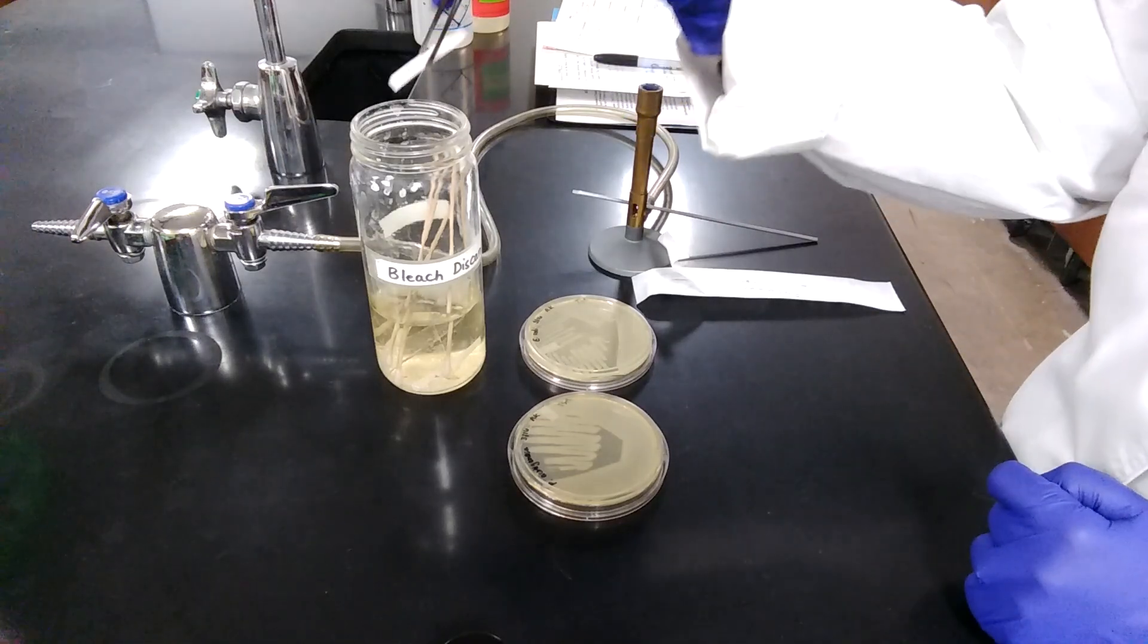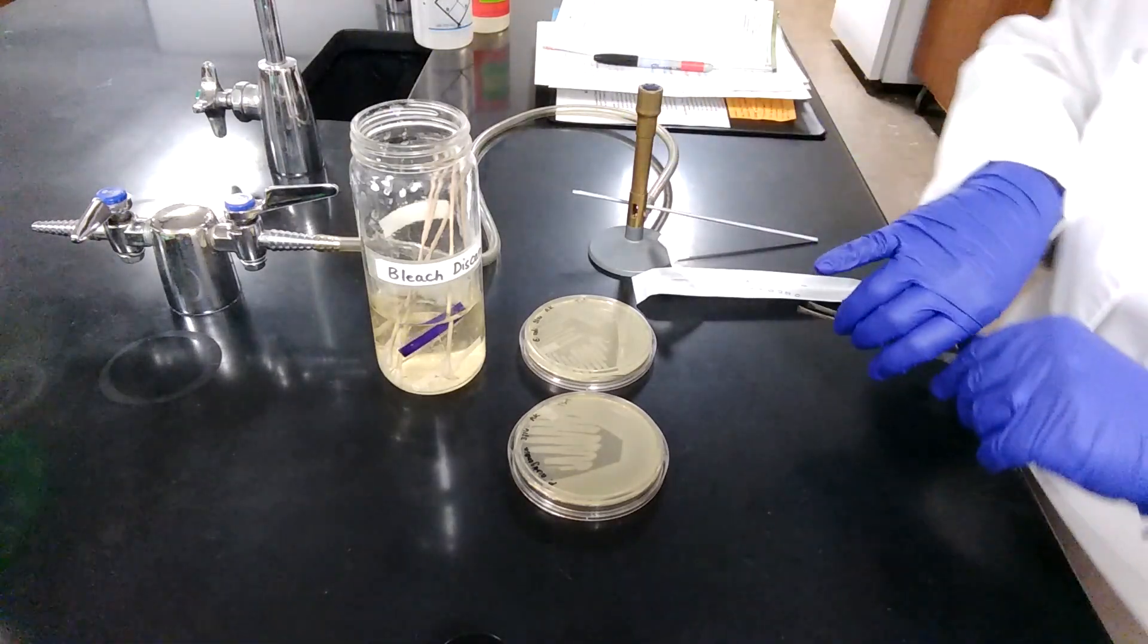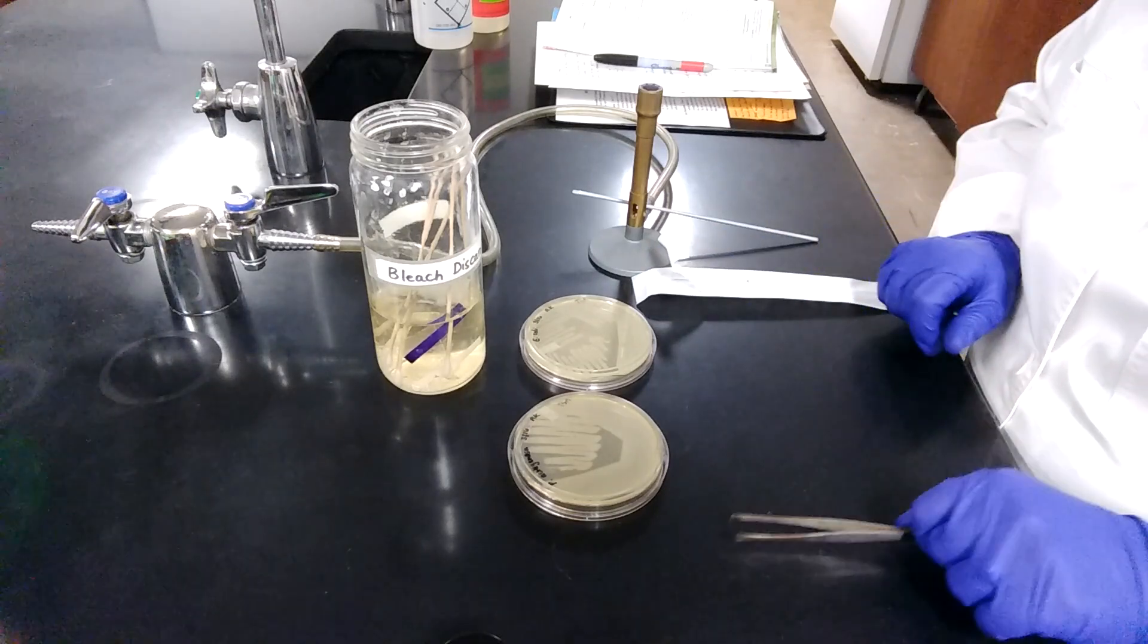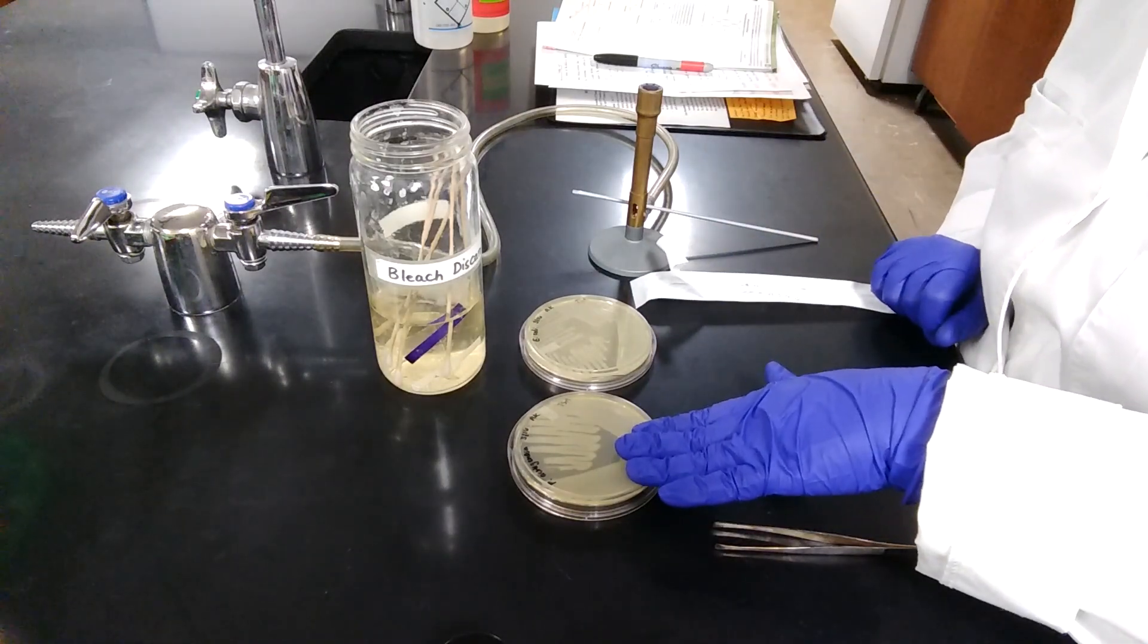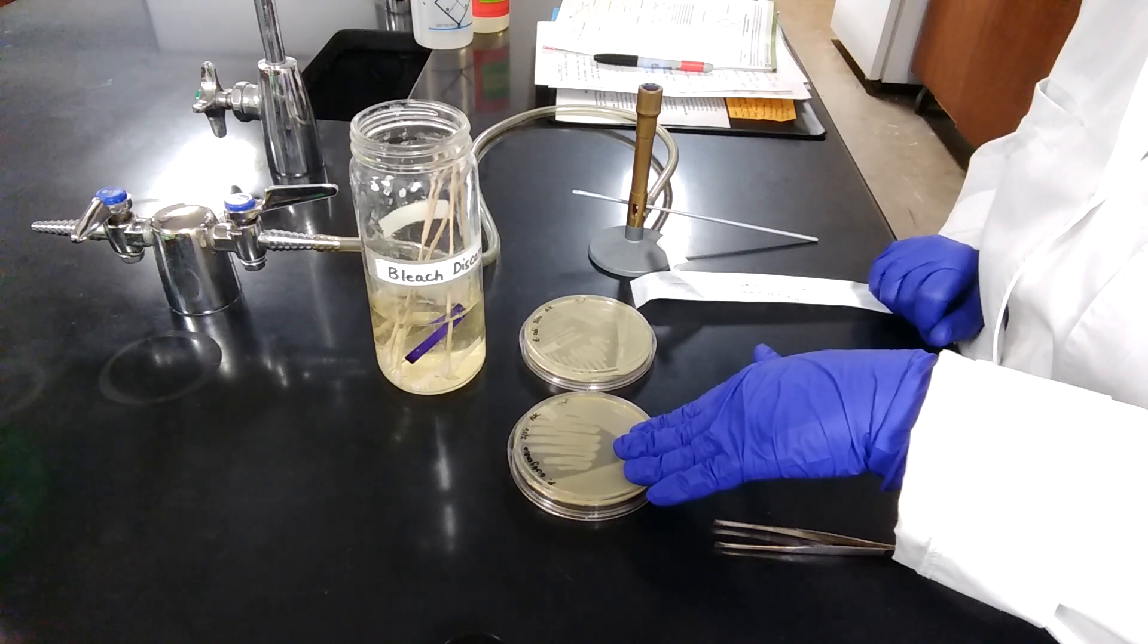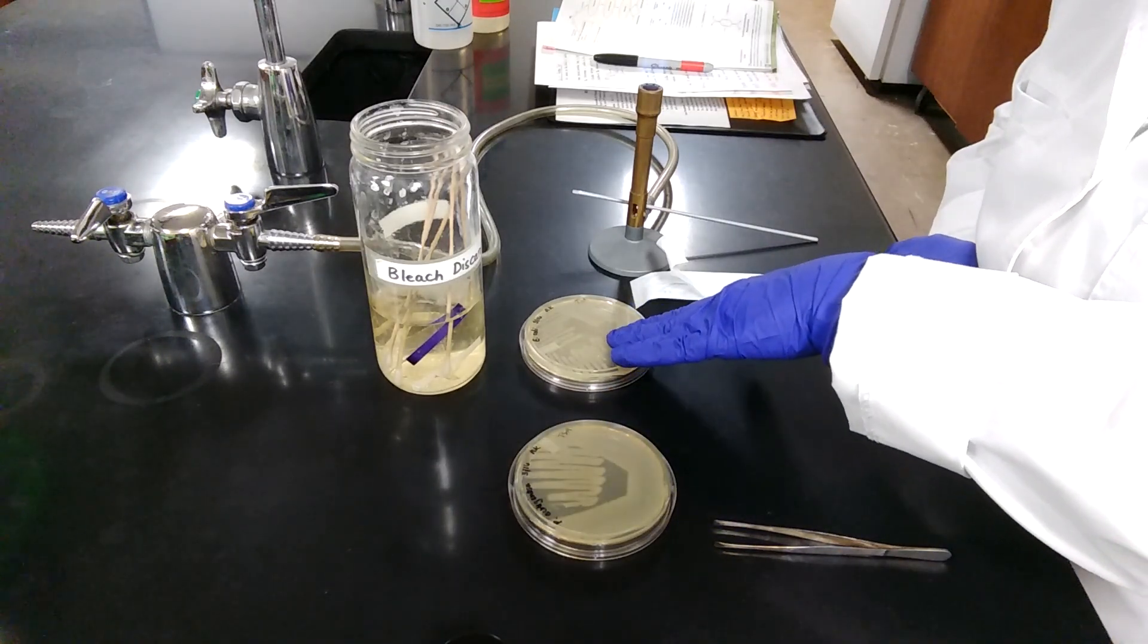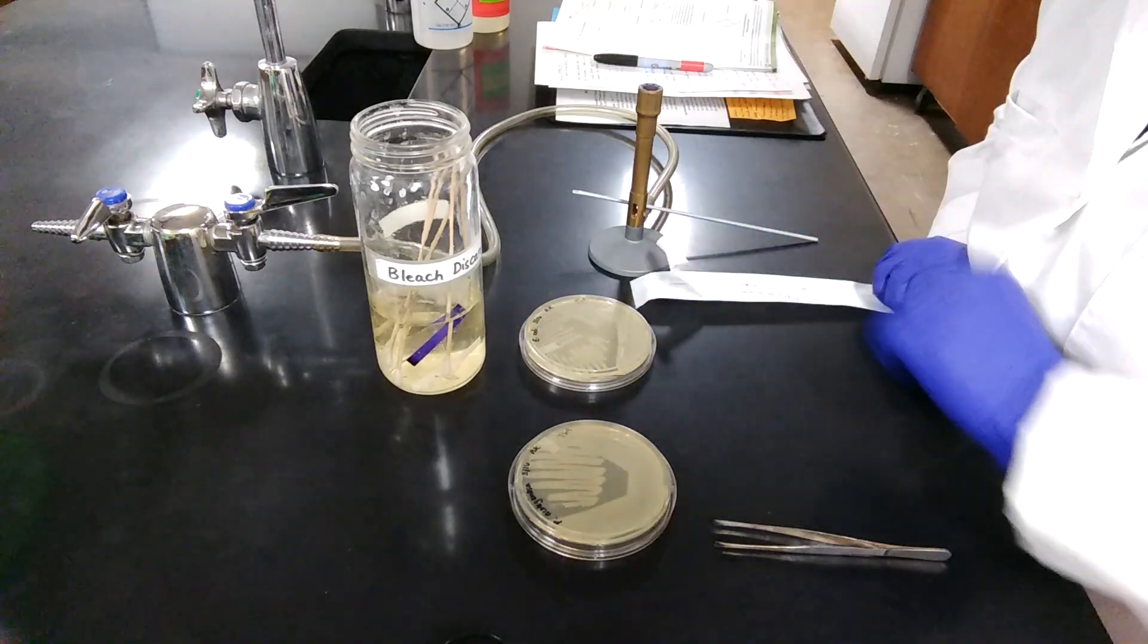Dispose of the used paper strip into the bleach discard and disinfect your work area. So the results suggest that Pseudomonas aeruginosa are positive for cytochrome C oxidase production, whereas E. coli are negative for cytochrome C oxidase production.